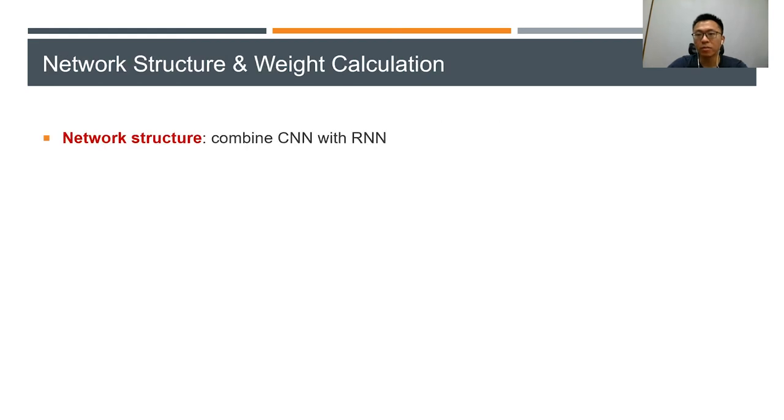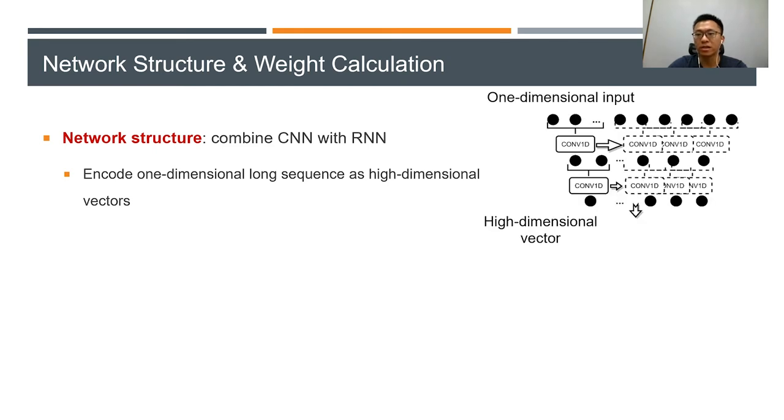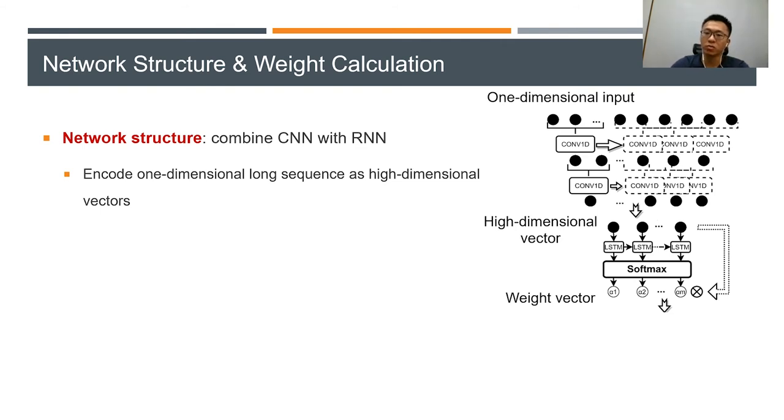Our network combines CNN with LSTM with convolutional layers. It encodes one-dimensional long sequences as high-dimensional vectors. Then the vectors are passed to LSTM layer and the softmax function, which outputs weight vectors. In the end, the dot product of the weight vectors and the feature vectors is sent to fully connected layers.